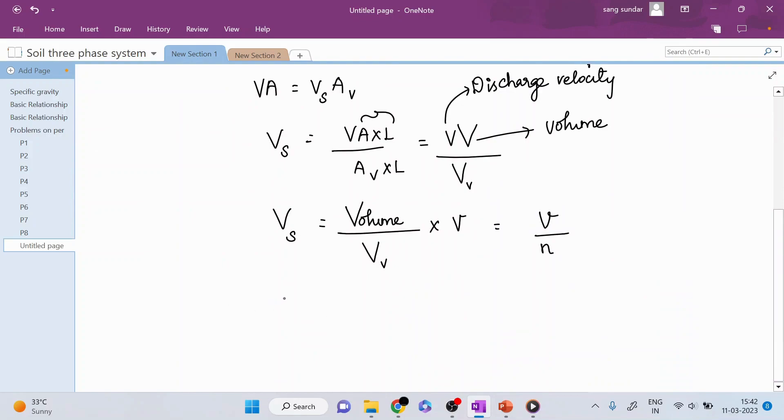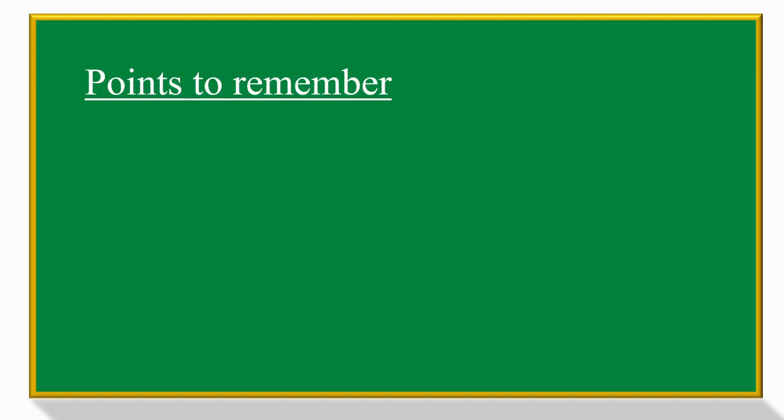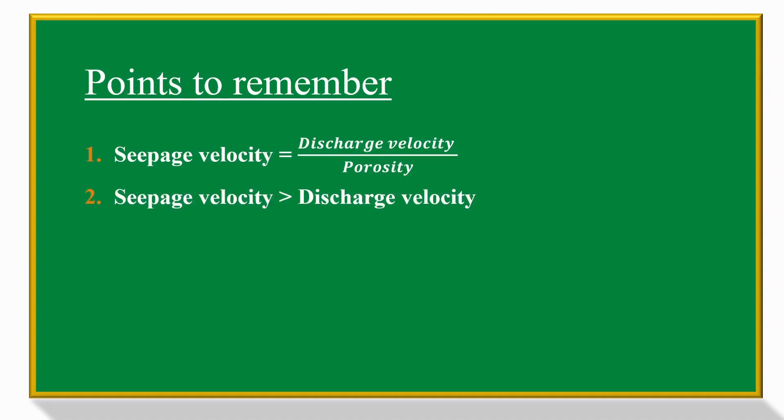Seepage velocity Vs equals discharge velocity v divided by n, where n is porosity. Seepage velocity is always greater than discharge velocity.